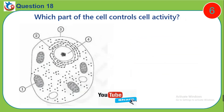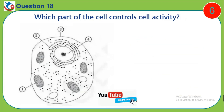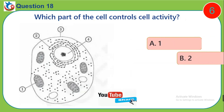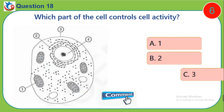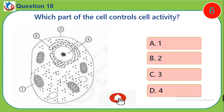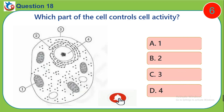Question 18. Which part of the cell controls cell activity? A. 1. B. 2. C. 3. D. 4.